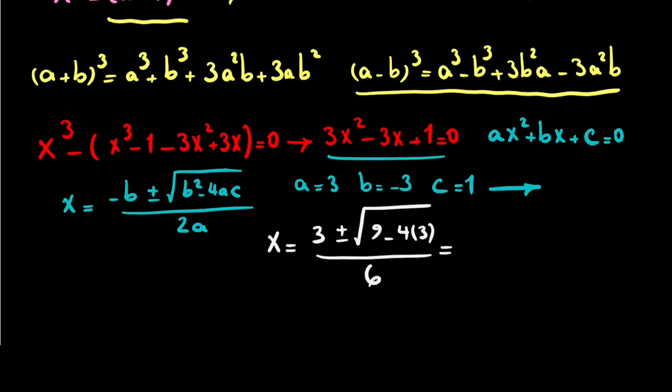So then 9 - 12 equals √(-3), and the answer will be (3 ± i√3) / 6. So it means this question has two answers and we found them.